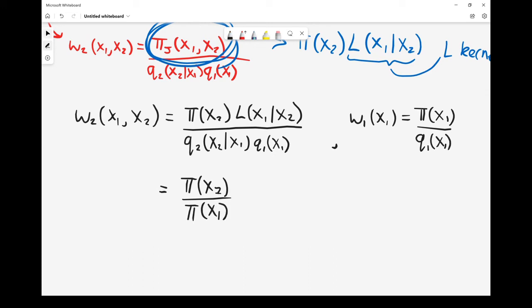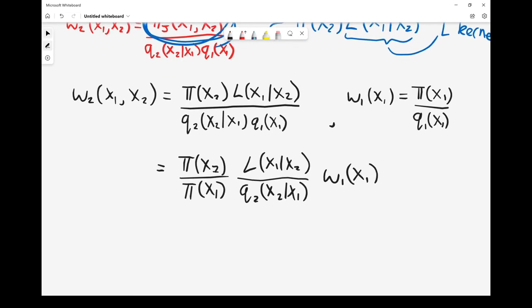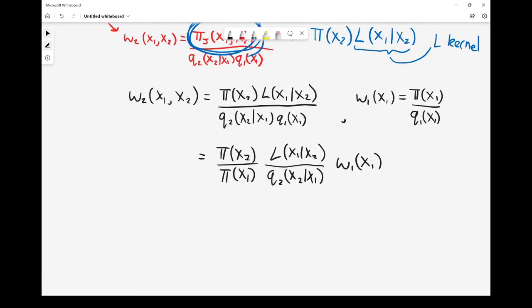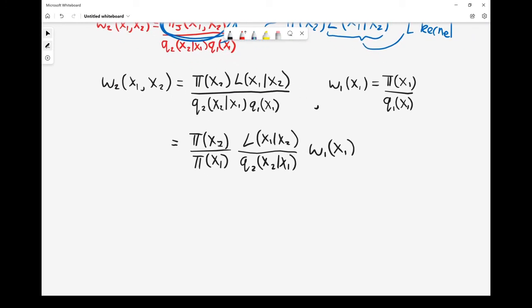We end up with our weights iteration 2 equal to this ratio, π(x2) divided by π(x1), i.e. target at x2 divided by target at x1, our L kernel, and then our second proposal, all multiplied by the weights at x1. Now we have an equation for sequentially updating the weight of our samples x2 given the weights of our samples at x1. You can imagine, you can extend that to further iterations, which we'll do in the next couple of videos.